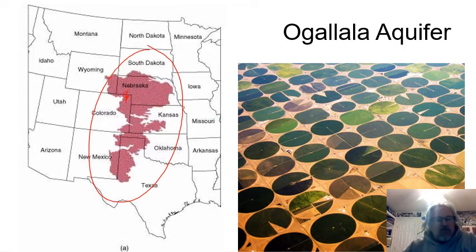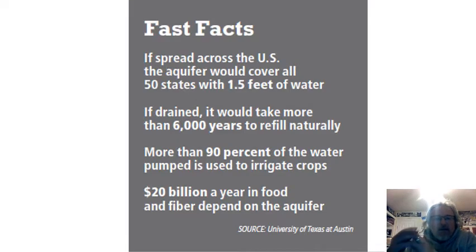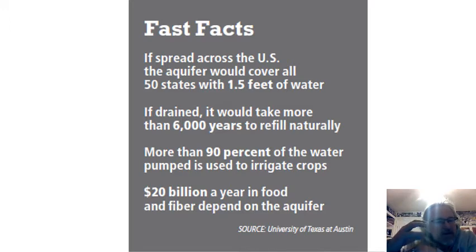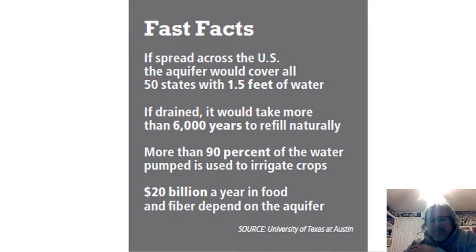The Ogallala Aquifer is a huge collection of underground water. If we took all the water out of it and spread it over the United States, we'd have about a foot and a half deep puddle. It would take about 6,000 years to fill back up naturally. We take a lot of water out of it — 90% of what we take is used to irrigate crops. About 20 billion dollars a year of food production relies on that aquifer, because it doesn't rain enough there and they have to pull water out of the ground.